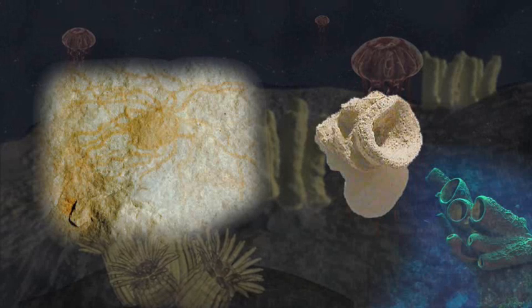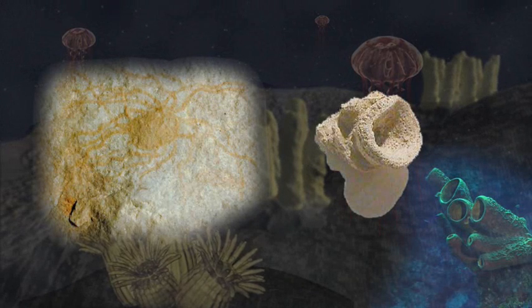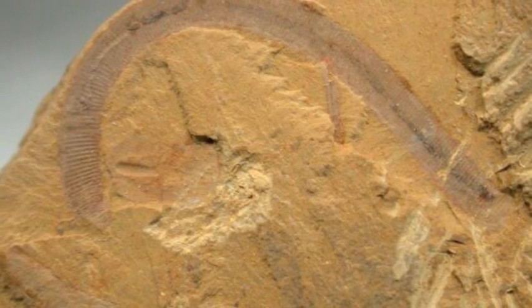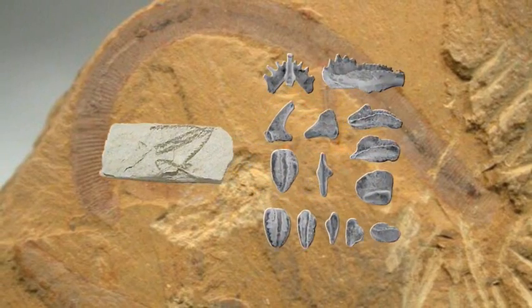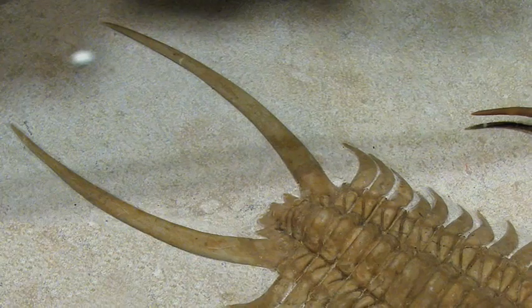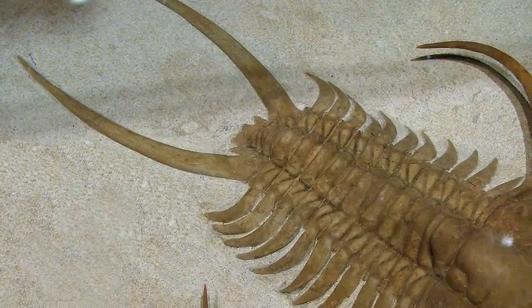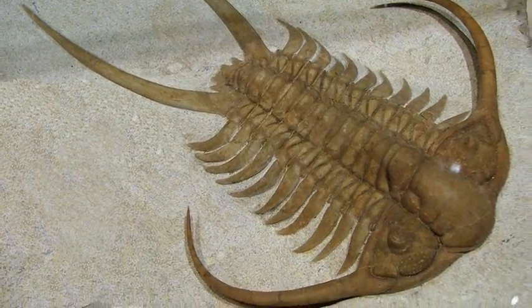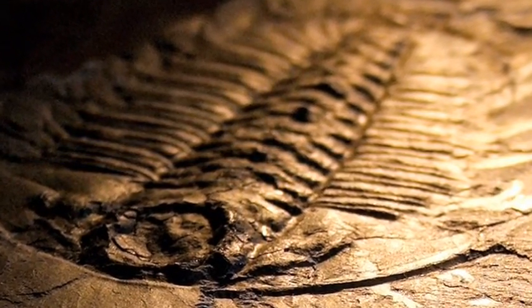By 580 million years ago, we find evidence for animals in the form of small sponges and sea anemones and jellyfish. The creatures of the Cambrian, 540 million years ago, are mollusks, trilobites, worms, echinoderms, and primitive chordates. All of these species are extinct today.